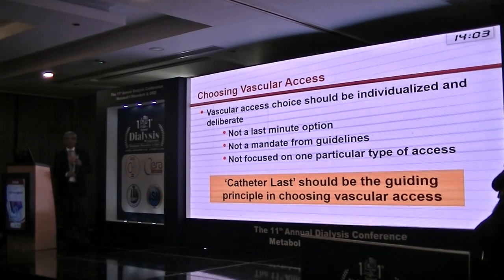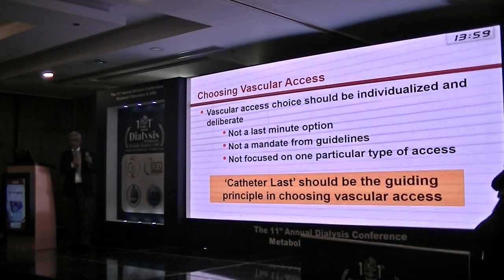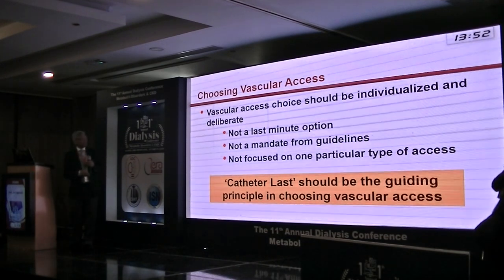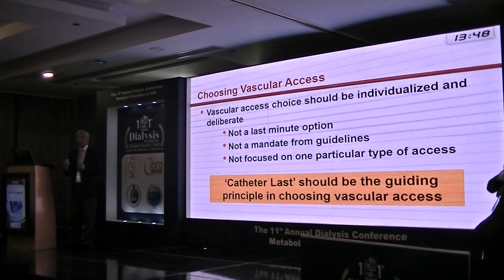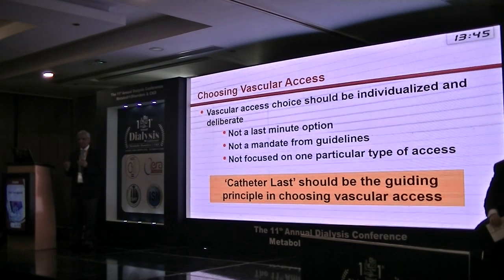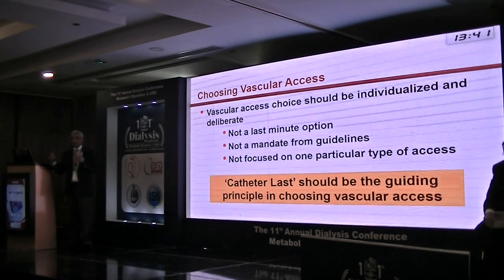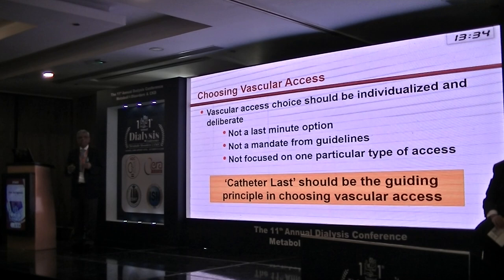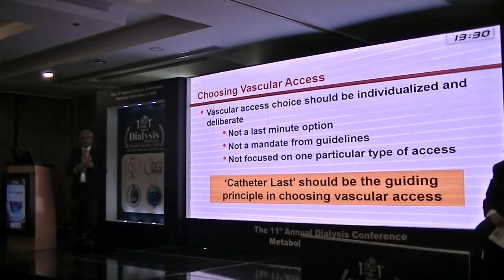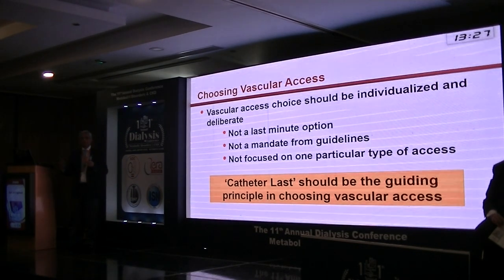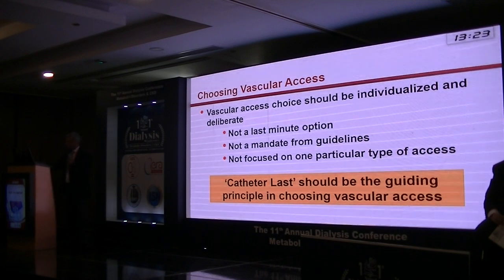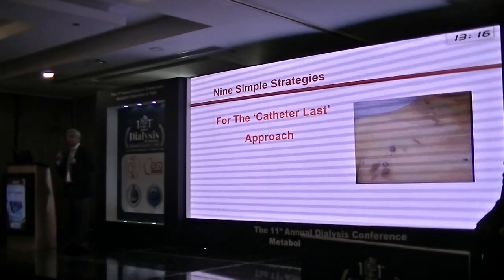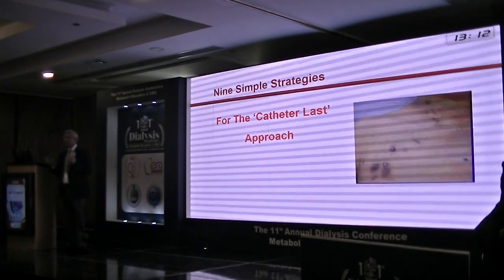It's a good idea to adopt a catheter-last approach instead of fistula first, because catheters are not the best type of access for anyone — except perhaps for people who are very terminal and going to die very soon, where there isn't enough time for fistula maturation. Generally, patients should have about a year of life expectancy before proceeding. So what I am going to describe very quickly are nine solid strategies you can use to avoid a catheter.